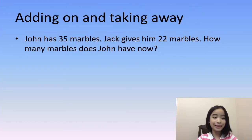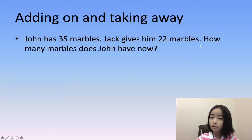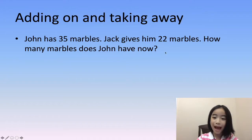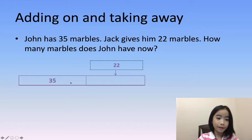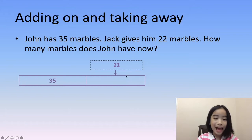Now let's do the second type called adding on and taking away. John has 35 marbles. Jack gives him 22 marbles. How many marbles does John have now? So John has 35 marbles earlier and Jack gives him another 22 marbles, and the question is how many marbles does John have now.